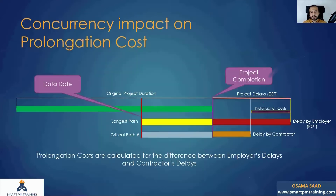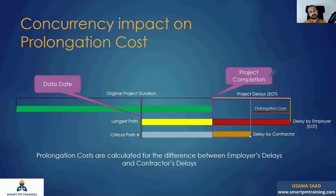He has to maintain those prolongation costs. In this case, this is the EOT entitlement and this is the critical path by the contractor. This is the concurrent delays — the longest path causing the delays. The employer has to reimburse the contractor for the difference between the EOT itself — the three months — and the one month attributable to concurrent delays. In other words, out of three months of EOT, the contractor is staying on the project because of his own default, so as the employer, I am not responsible and should not reimburse him for that one month.